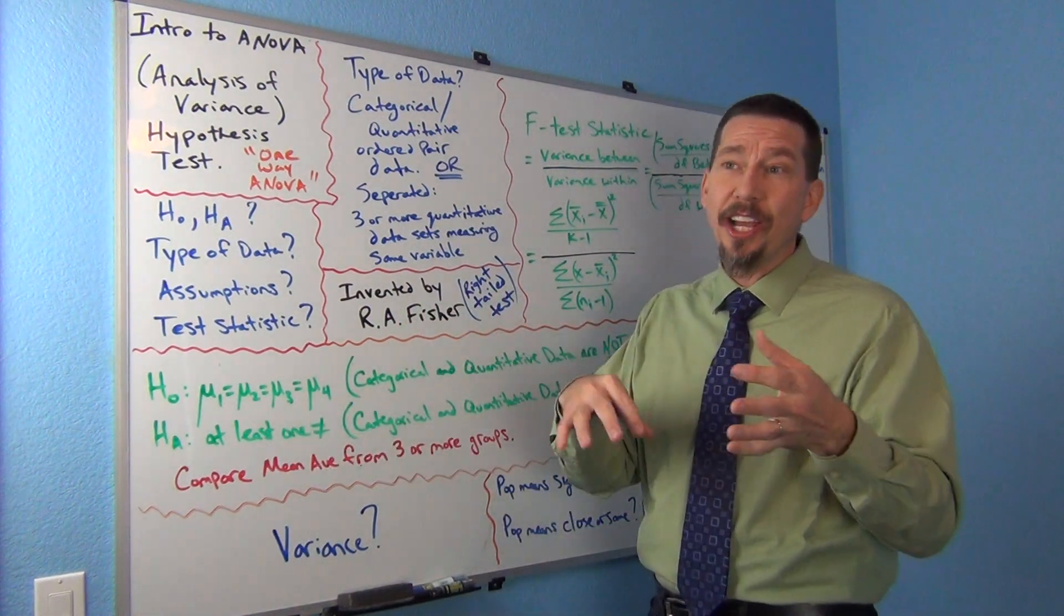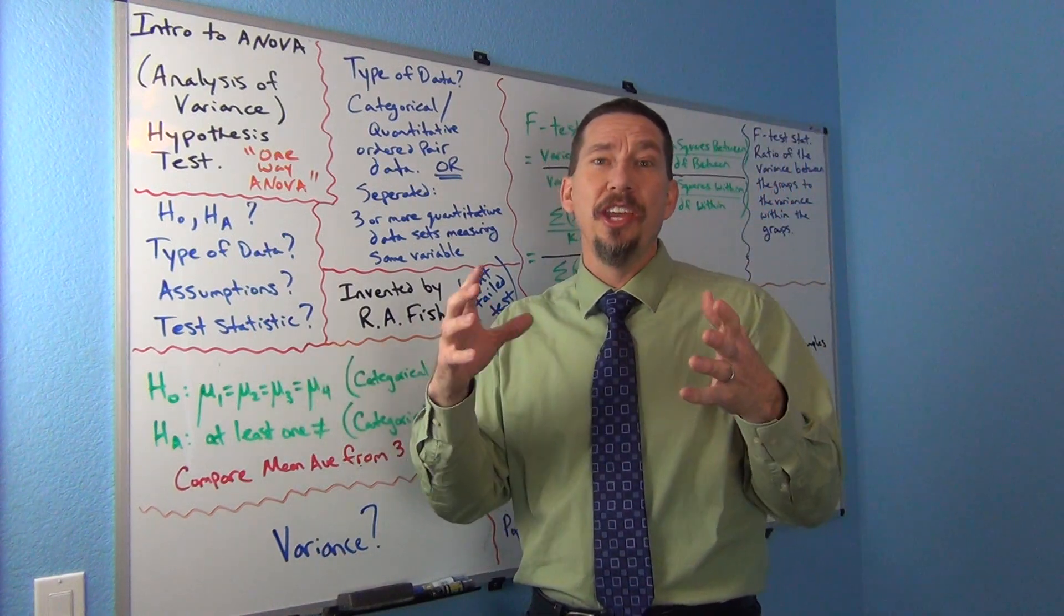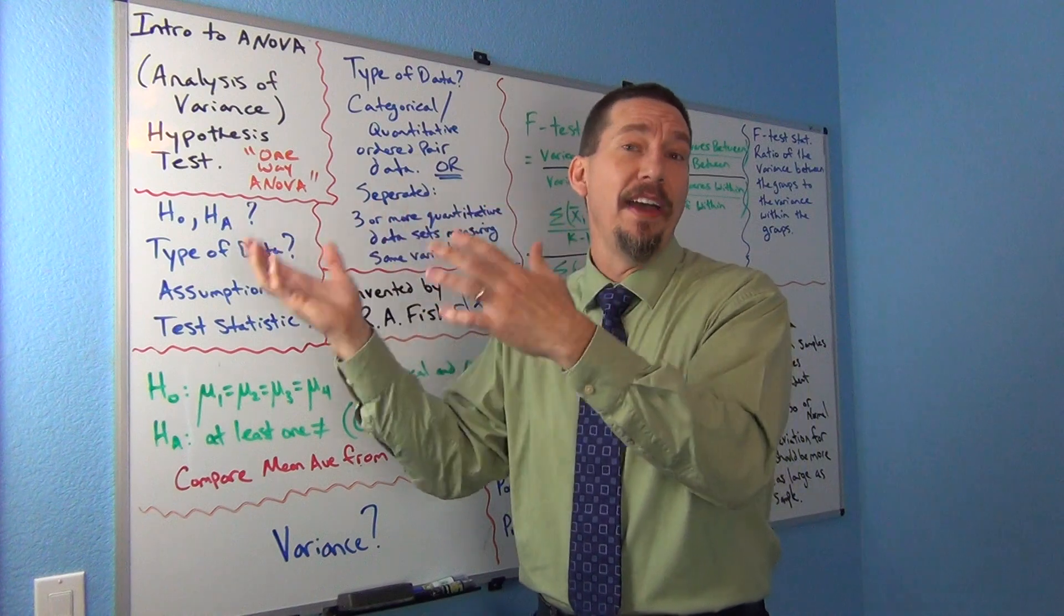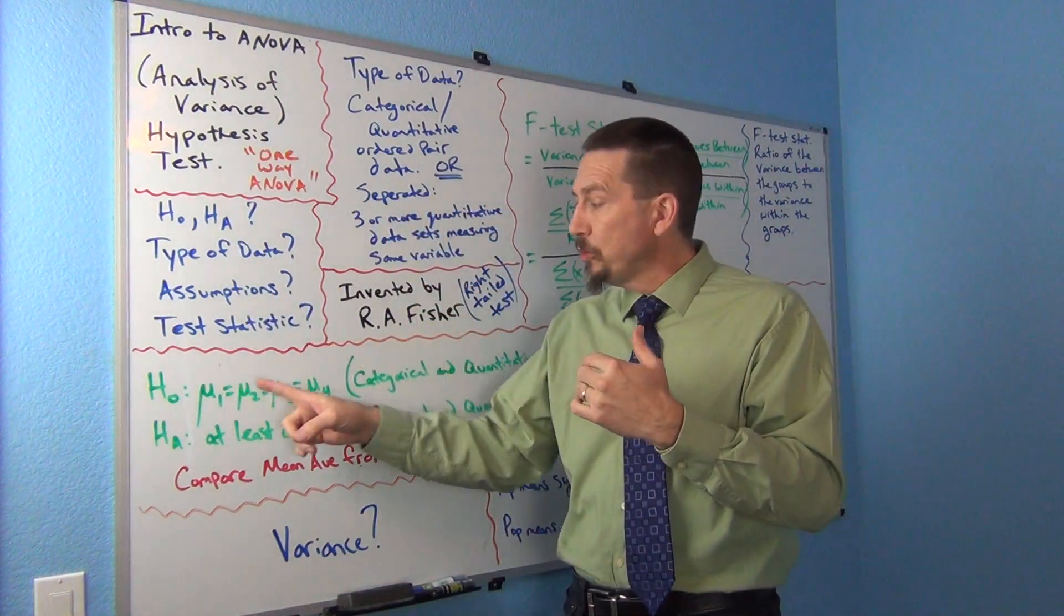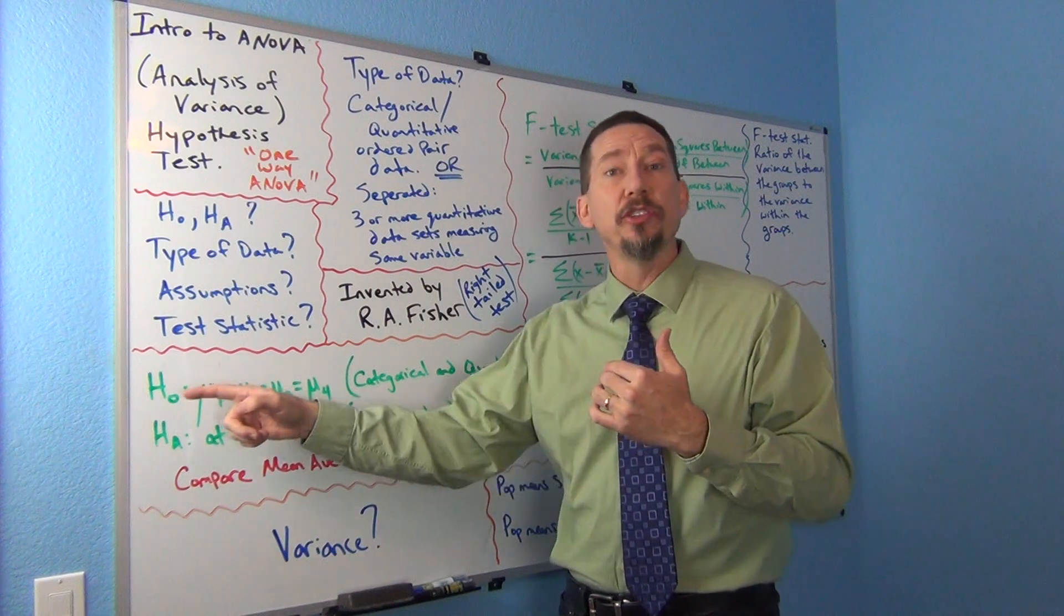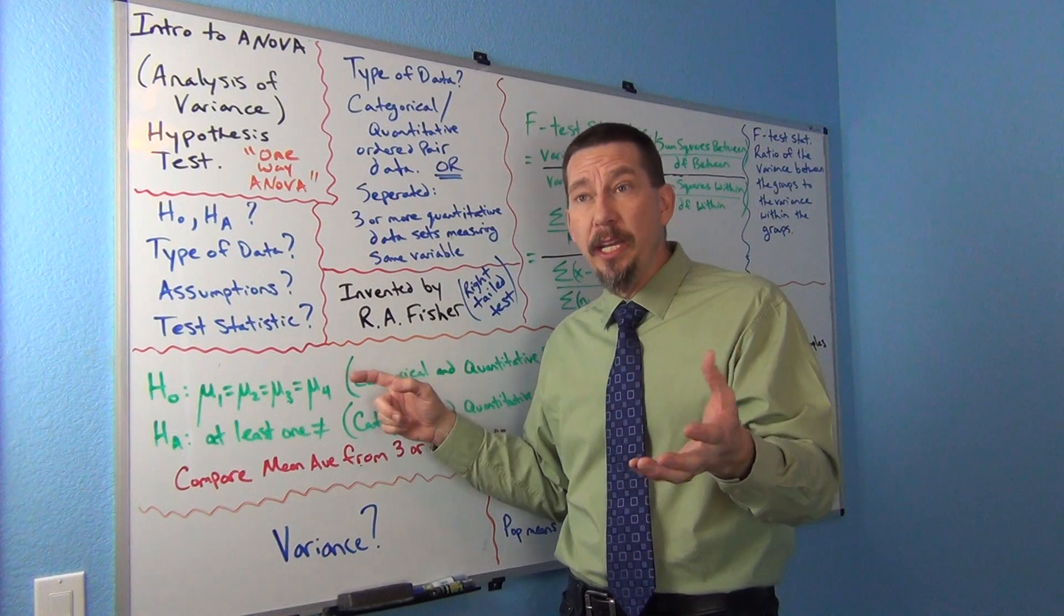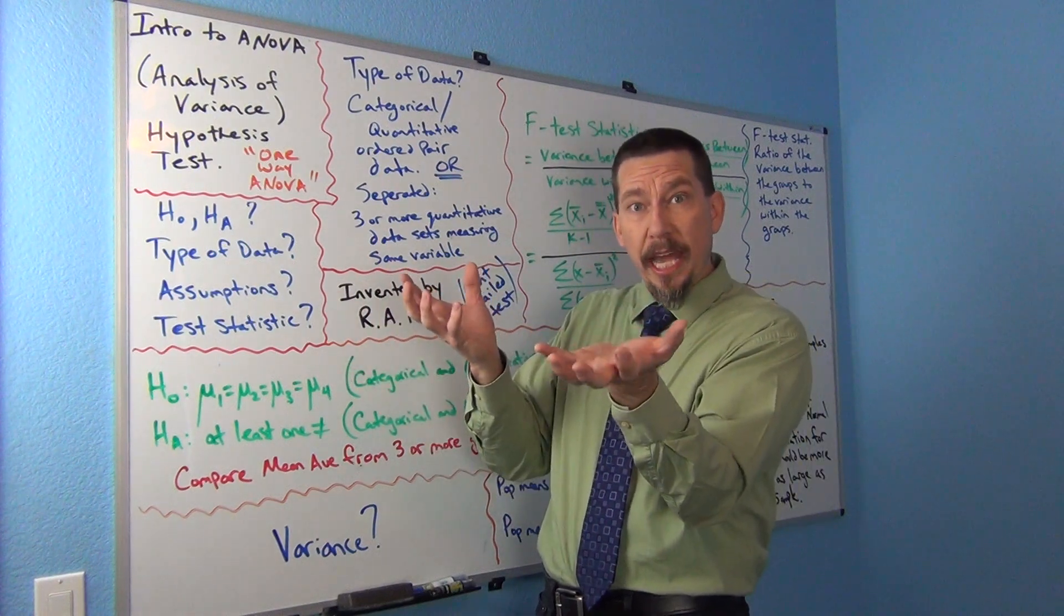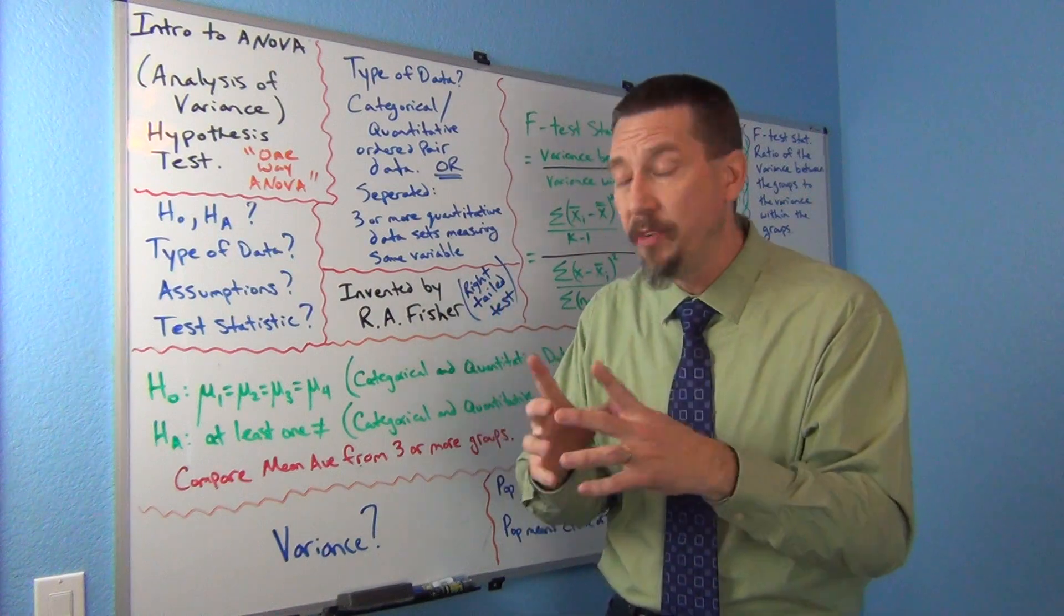That's kind of an interesting idea that goes through a lot of these relationship tests. Equal to usually implies not related. I think when we first taught null and alternative hypothesis, I mentioned that sometimes the null is not related or no effect. And this is the reason why, because to prove not related, you're going to have to show things are equal. In this case, if all the means were equal, it wouldn't matter what group I'm in. And that means the grouping, the categorical variable, is not related to the quantitative variable.